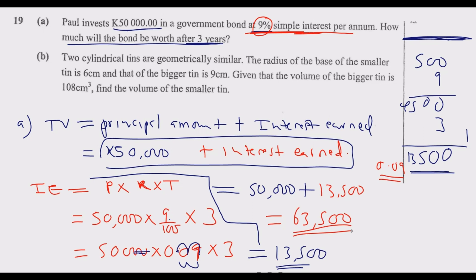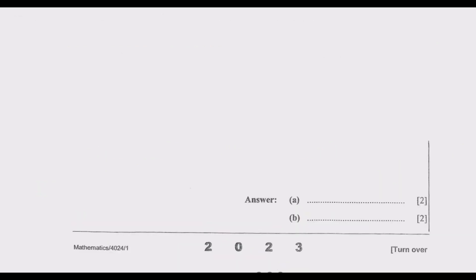If you prefer, you can multiply 50,000 by 9, cancel the two zeros, multiply 500 by 9 then by 3 to get 13,500 — same result. So the bond will be worth 63,500 quatsha at the end of 3 years.